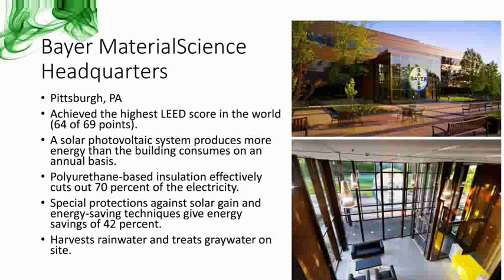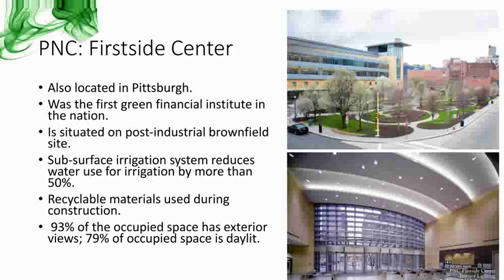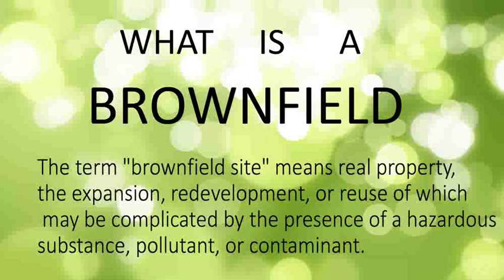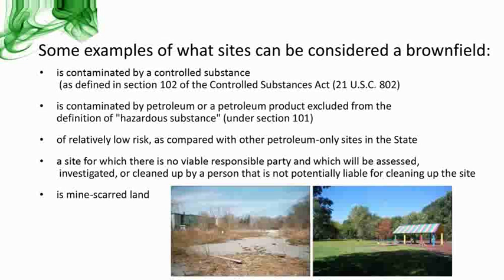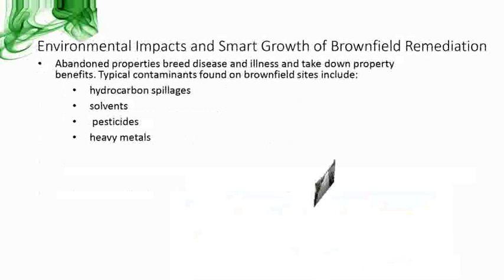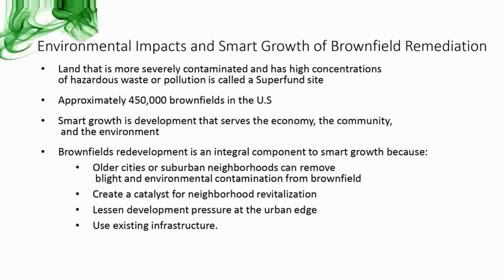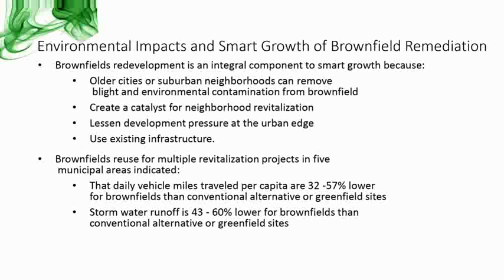The Bayer headquarters treats gray water on site, reducing water consumption. The PNC First Side Center was the first green financial institute in the nation. It was built on a brownfield site and uses recyclable materials and a subsurface irrigation system to reduce water consumption. A brownfield site means property whose expansion, redevelopment, or reuse may be complicated by the presence of a hazardous substance, pollutant, or contaminant. Abandoned properties breed disease and illness and take down property values. Land that is more severely contaminated with high concentrations of hazardous waste or pollution is called a Superfund site. There are approximately 450,000 brownfield sites in the U.S., and they are vital components of smart growth communities.